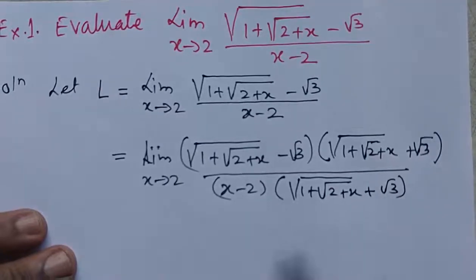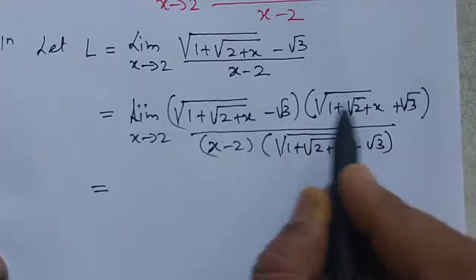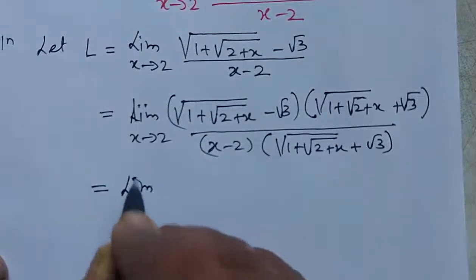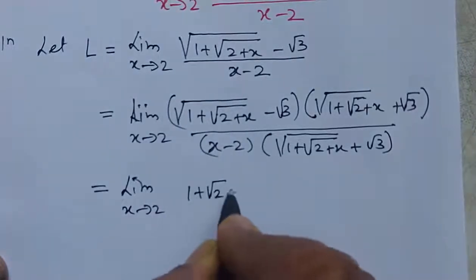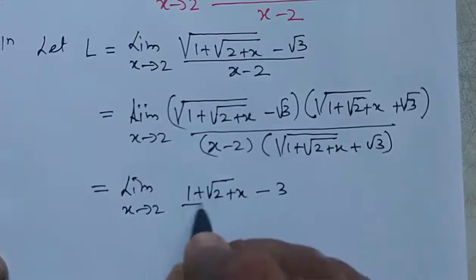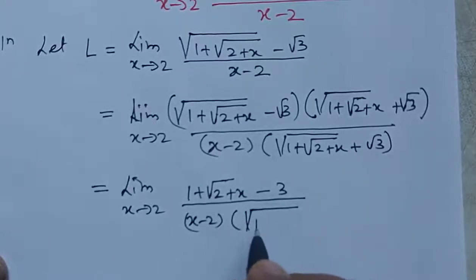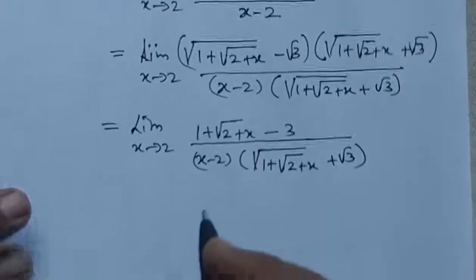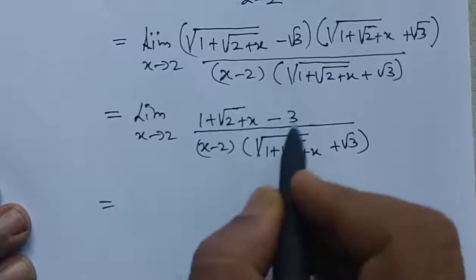Using the identity (a minus b)(a plus b) equals a squared minus b squared, the numerator becomes: square of (1 plus square root of (2 plus x)) minus square of root 3, which simplifies to 1 plus square root of (2 plus x) minus 3, giving square root of (2 plus x) minus 2.